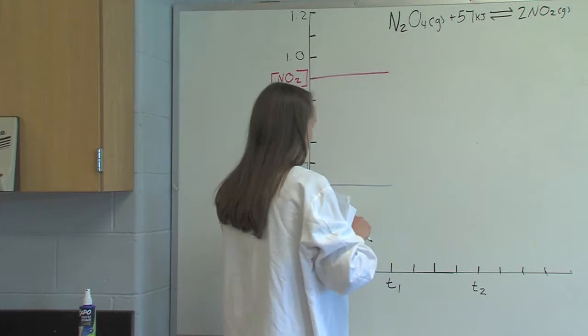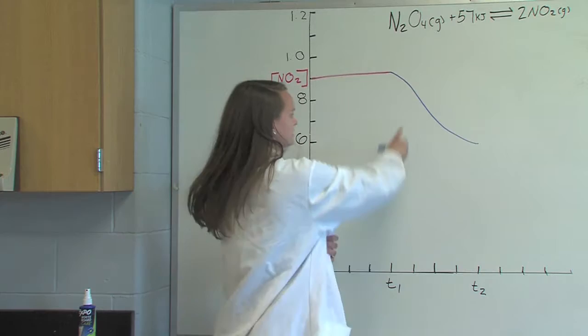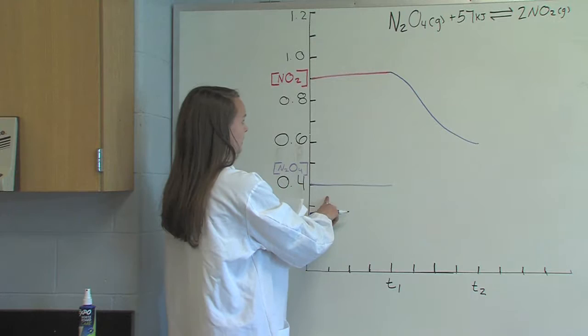So the graph will look like this. This line will be twice as steep as this line as well, according to the coefficients.